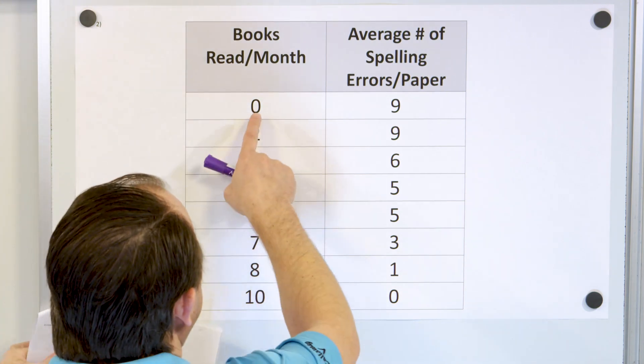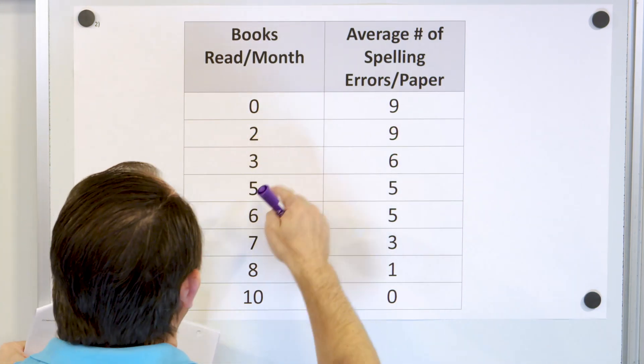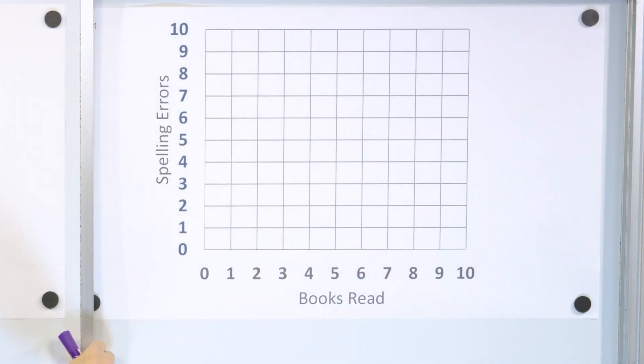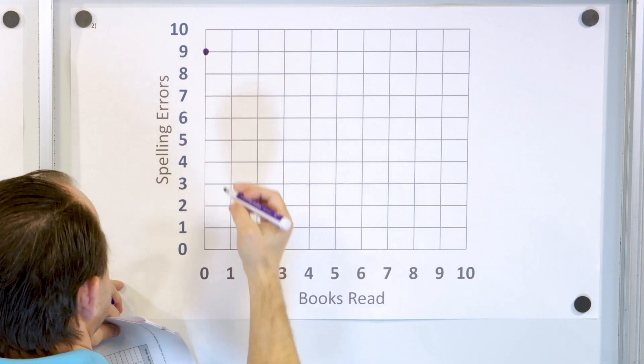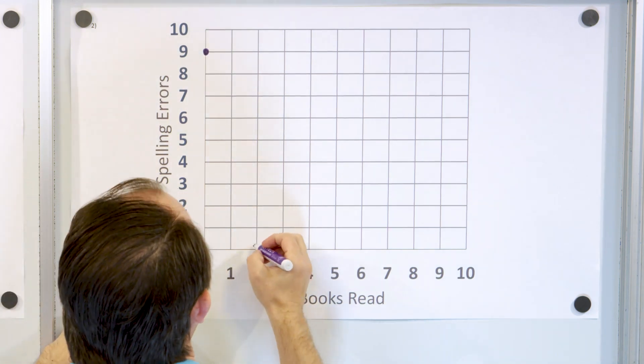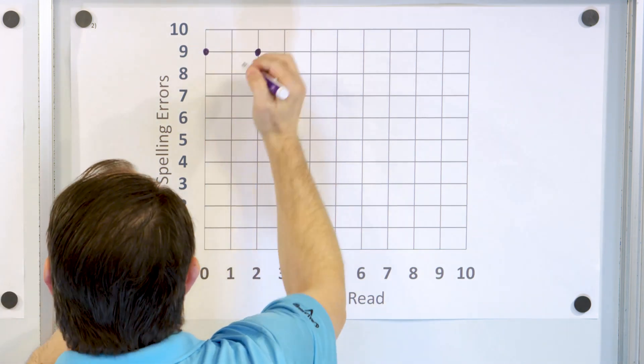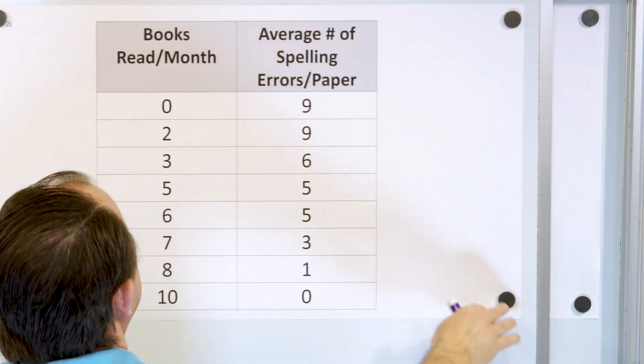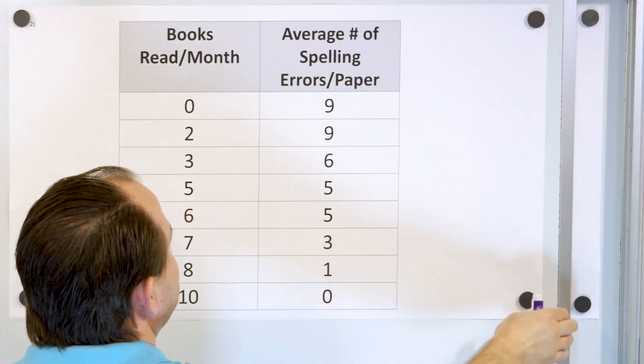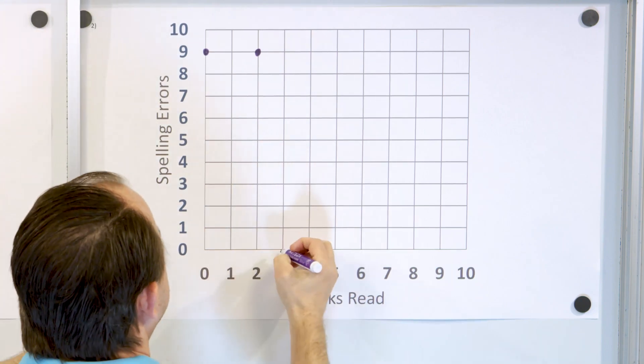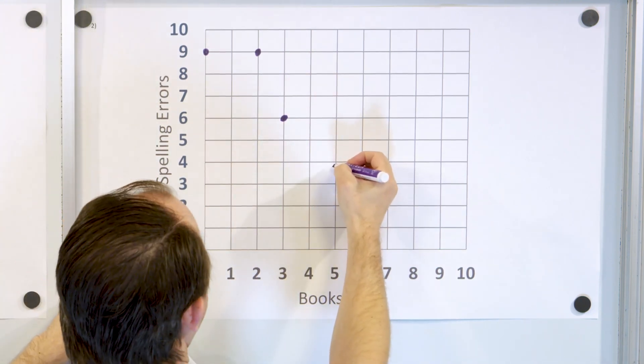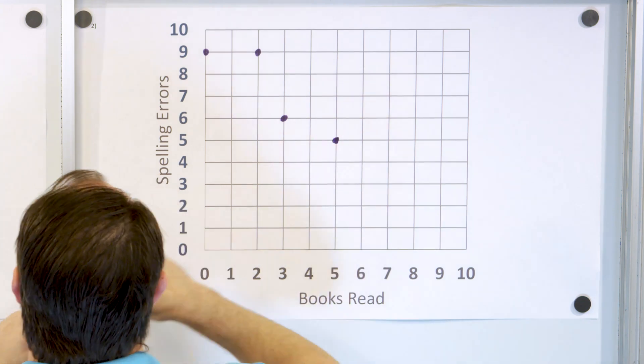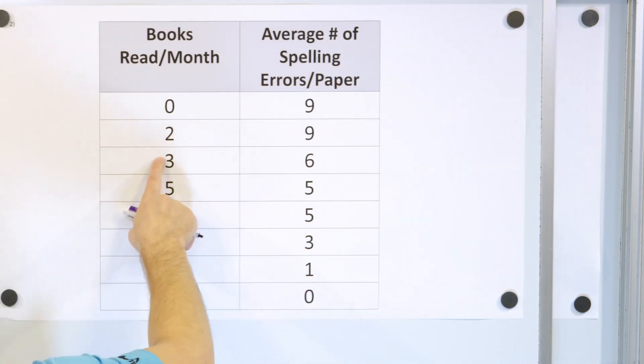The first point is zero, nine, and then two, nine. So these are different people. So zero comma nine, and then two comma nine. And then we're going to take a look at our next set, three comma six, five comma five. So three comma six, five comma five.